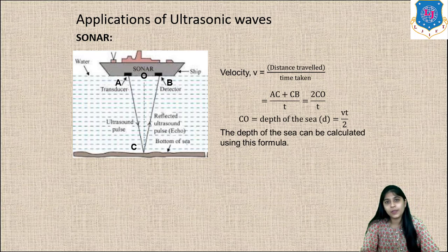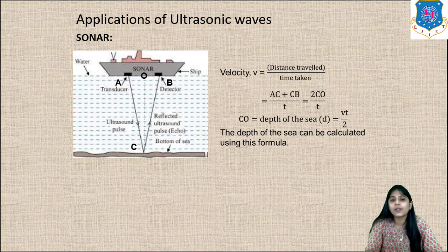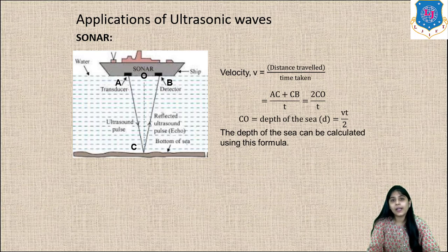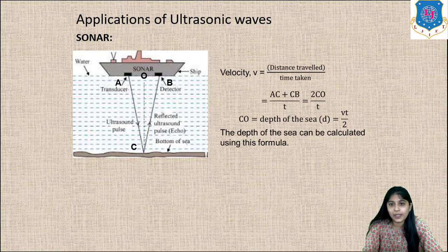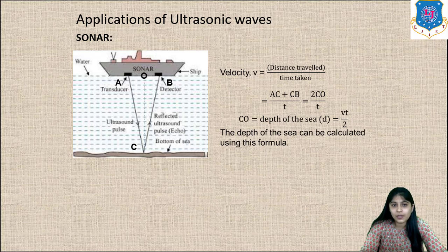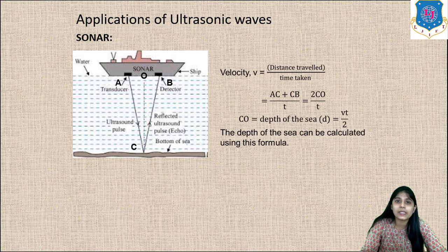As shown in the diagram, a ship has two transducers — one for transmitting and one for receiving ultrasonic waves. When the ultrasonic wave is reflected from the depth of the sea and received by the receiver, we can calculate the depth using the equation of velocity: velocity is the ratio of distance travelled to time taken.